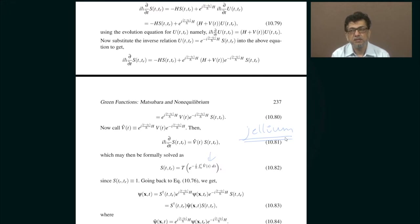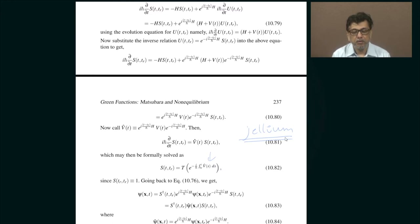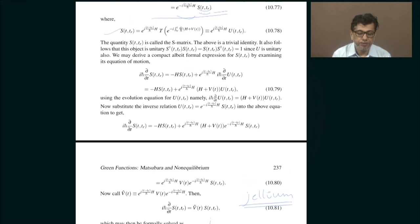The system is no longer going to depend only on the time duration between creating and annihilating a particle, but rather it also depends on how long after this disturbance you are doing the creating and annihilating. So it is going to independently depend on those two times. That is the reason why you need the non-equilibrium Green's function.